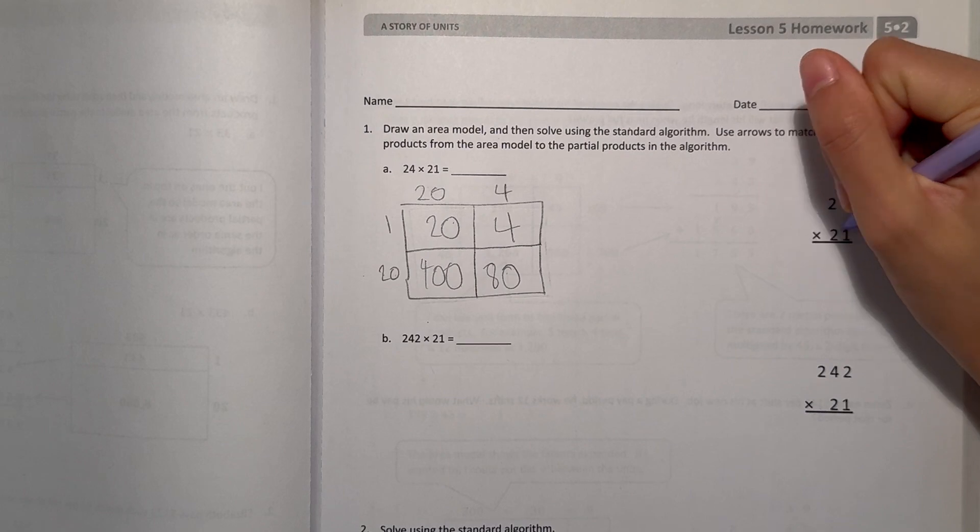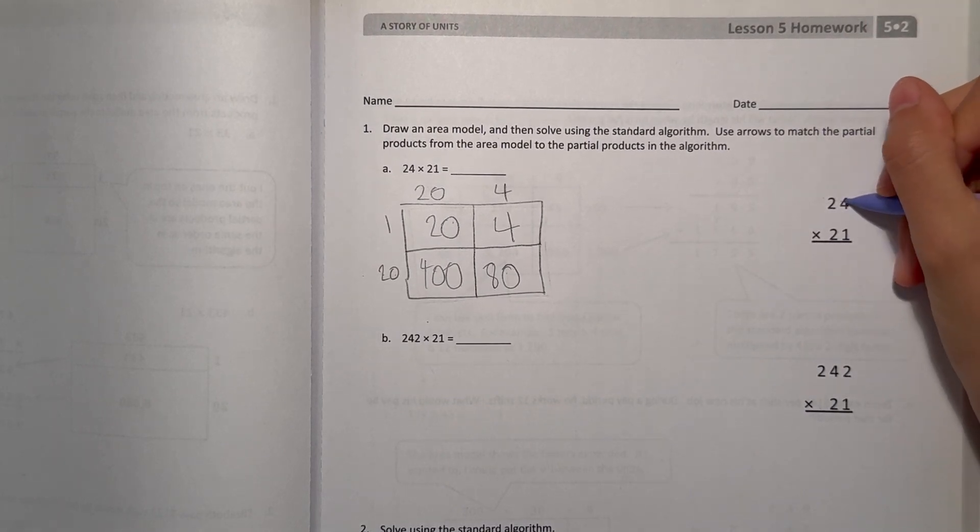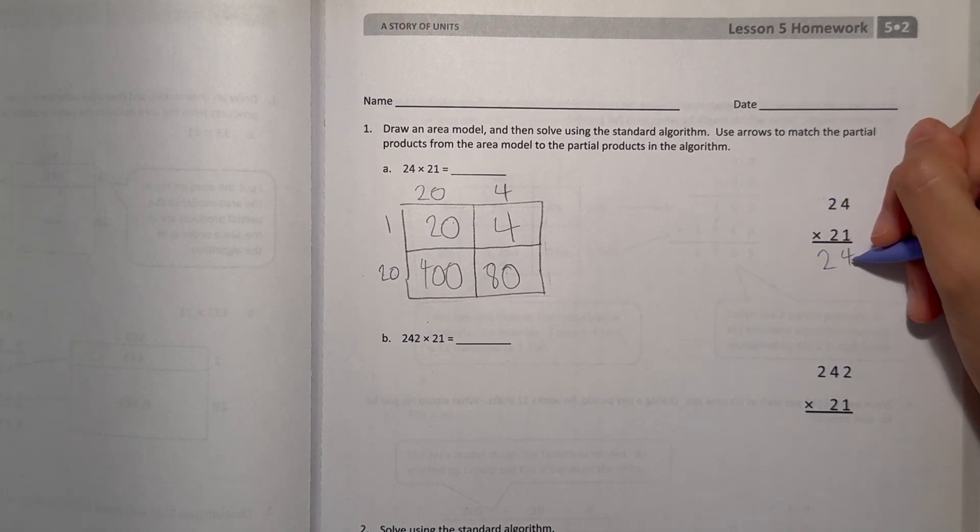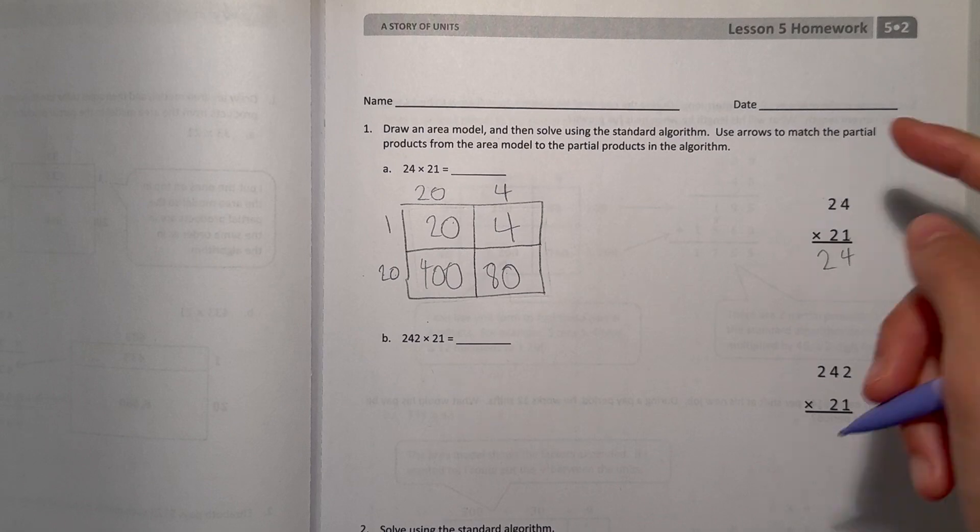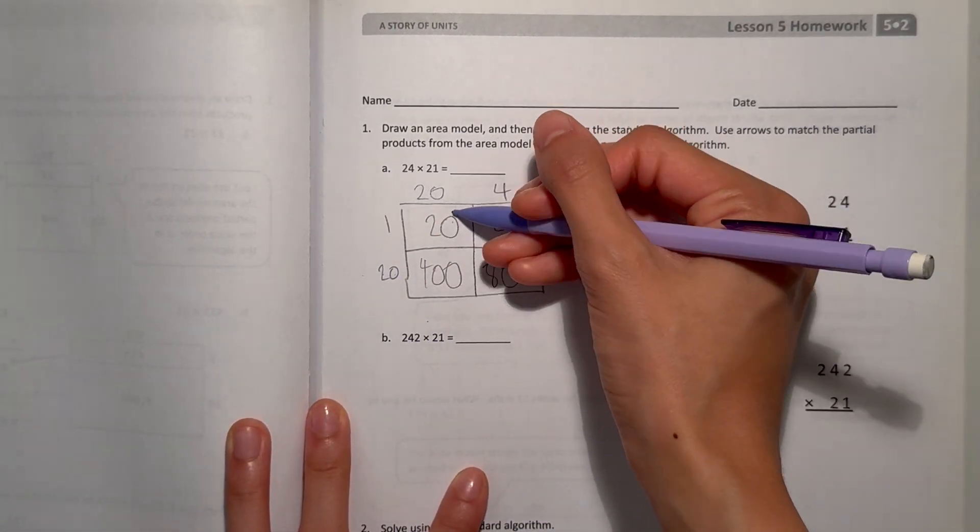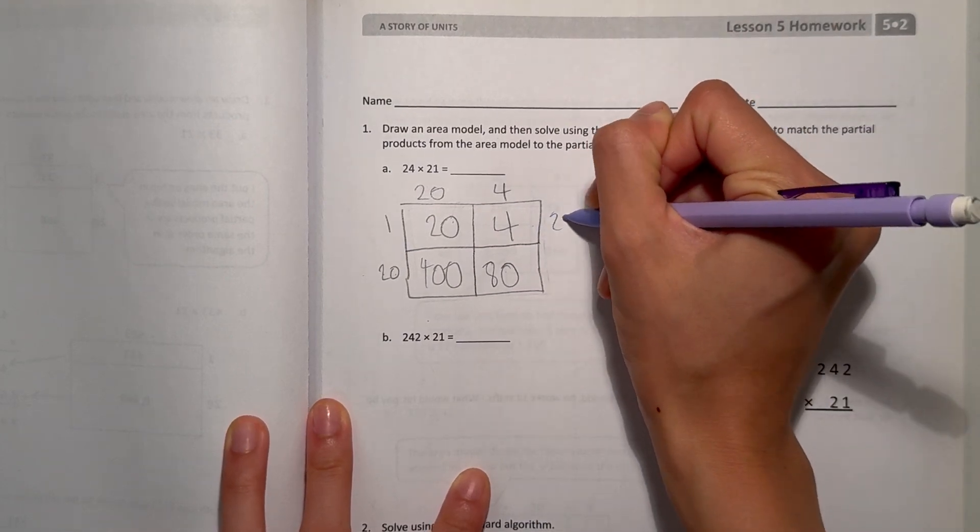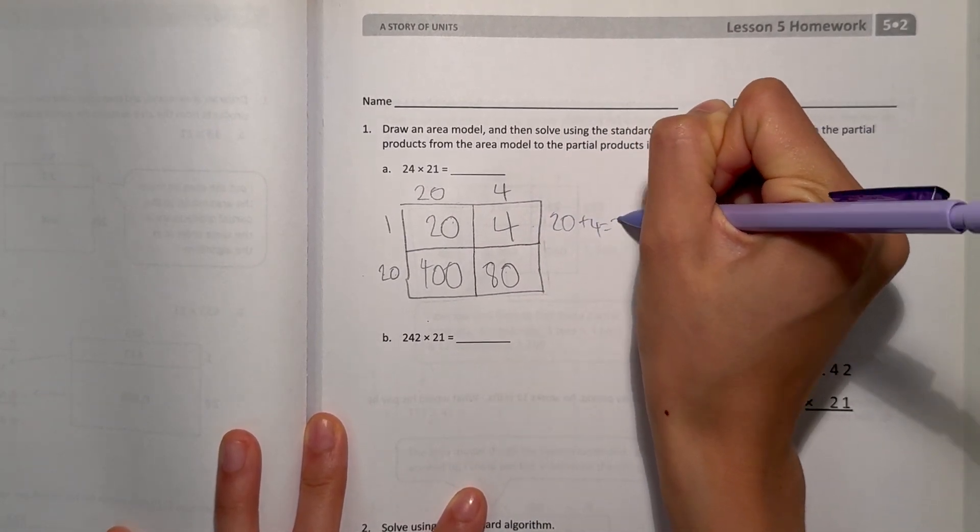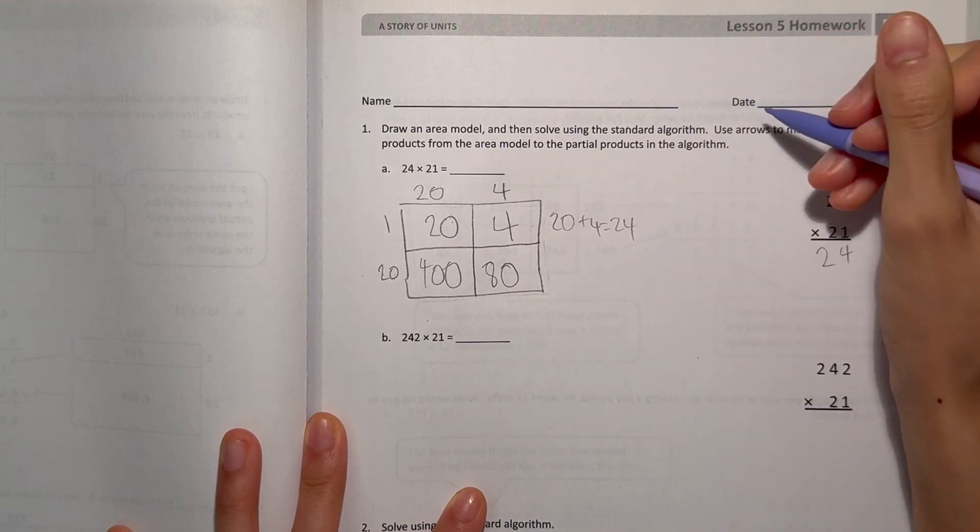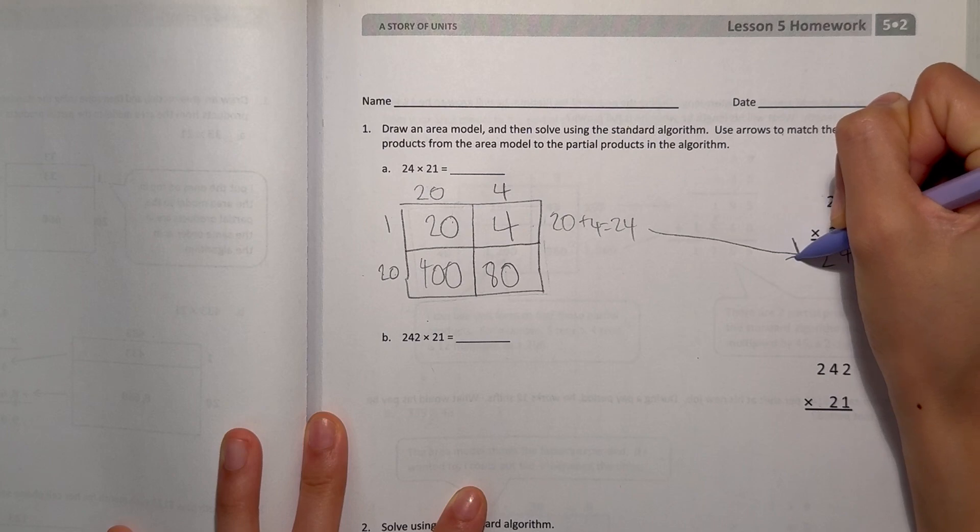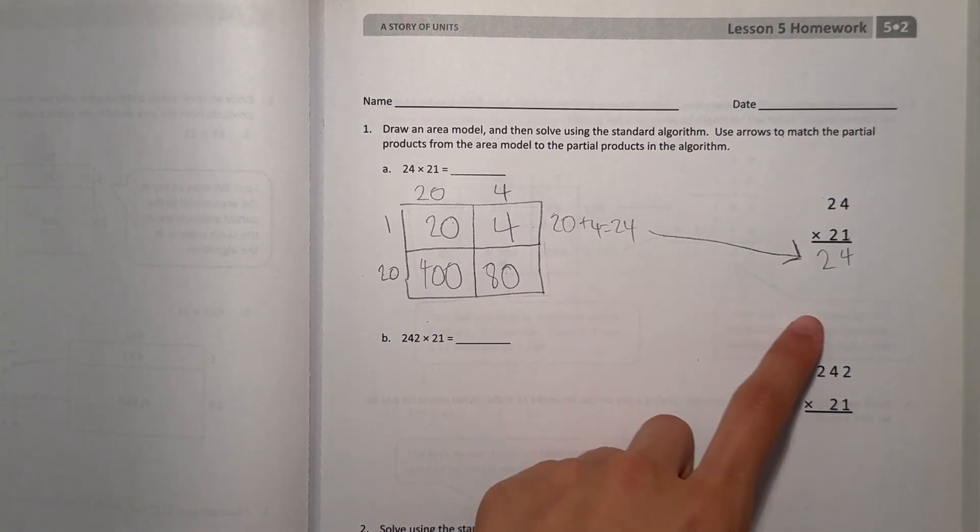So now let's do our standard algorithm. 24 times 21. Let's look at the 1 first. 4 times 1 is 4, and 2 times 1 is 2. So here, first we have 24. So if we look here, our first row here, 20 plus 4 is 24.